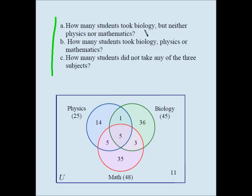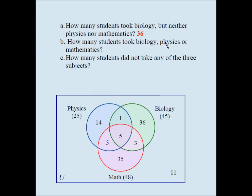These are the original questions. How many people took biology but neither physics nor math? The answer is thirty-six. How many people took biology, physics, or mathematics? I add all these numbers and the sum is ninety-nine, so ninety-nine took biology, physics, or mathematics. How many students did not take any of the three subjects? That has to be eleven. These are my answers to the three questions.